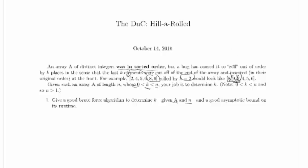So if we use 1-based indexing — obviously you could do this with 0-based indexing as well — then we're looking at these indexes, and as soon as we find the point where things drop, it's the previous index that tells us what k is. And we know we will have a drop, because k is at least 1 and at most n-1, so at least one element has been rolled and at least one hasn't, meaning there will be a pair of elements that are out of order.